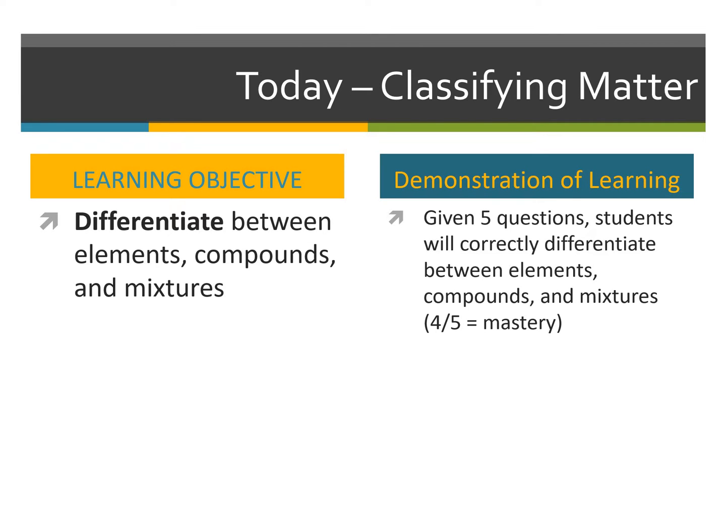Today we'll continue with the topic of classifying matter. We still need to be able to differentiate between elements, compounds, and mixtures. Given five questions, I need you to be able to differentiate between elements, compounds, and mixtures. To achieve mastery, you're going to need to get four out of five questions correct.